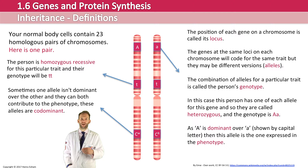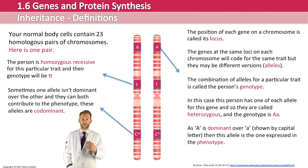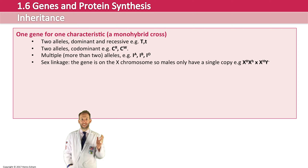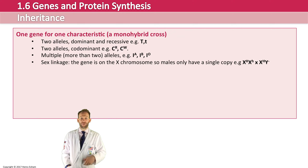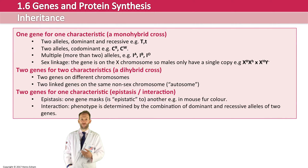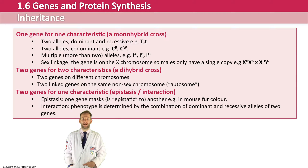Now we're going to work through all the different types of inheritance you need to know about. First, we'll look at when you've got one gene coding for one characteristic and how that can be passed on. Then we'll look at two genes coding for two separate characteristics, and finally we'll look at examples where two genes work together to code for one particular characteristic.